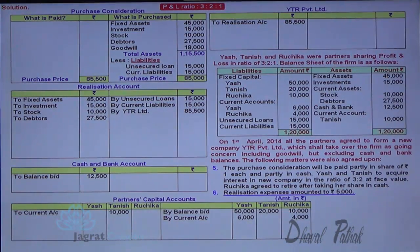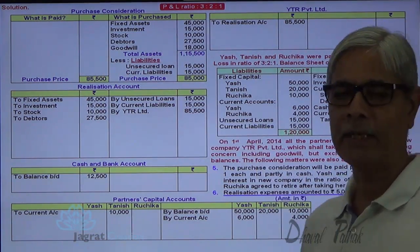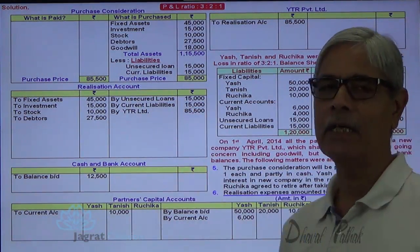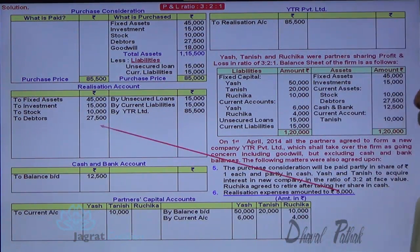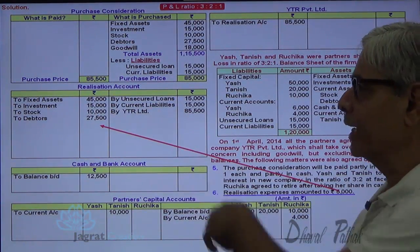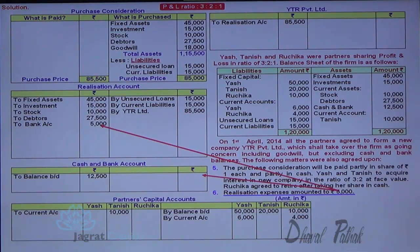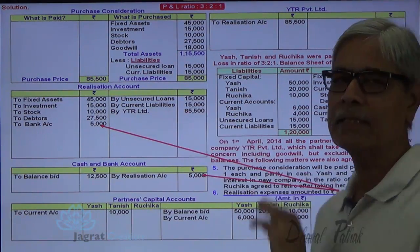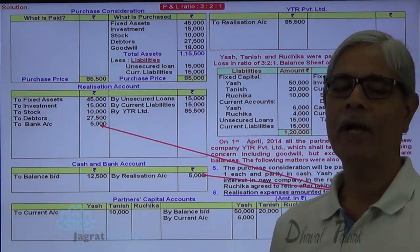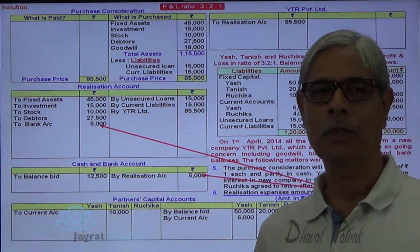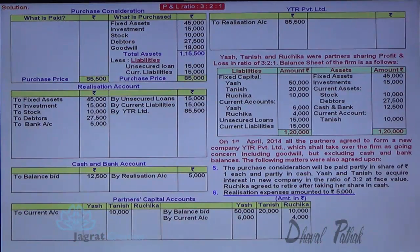This is the consideration to be received. Now let me close the realization account and find out the profit or loss on realization of assets and liabilities. Before that, I need to pay the dissolution expenses of 5,000, so realization account is debited and cash account is credited. After debiting realization expenses, I can find out the profit or loss on realization.